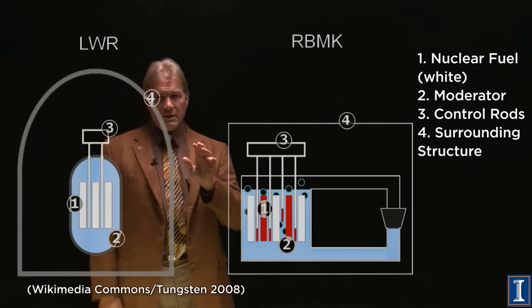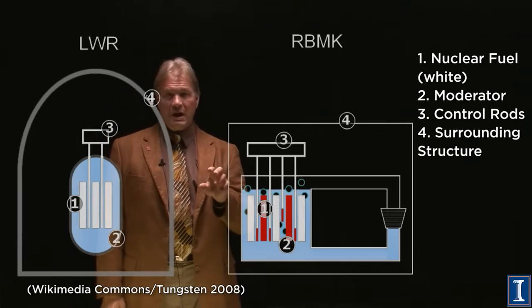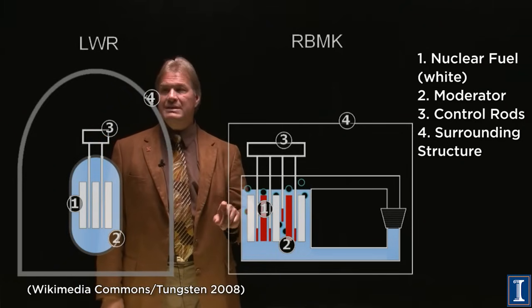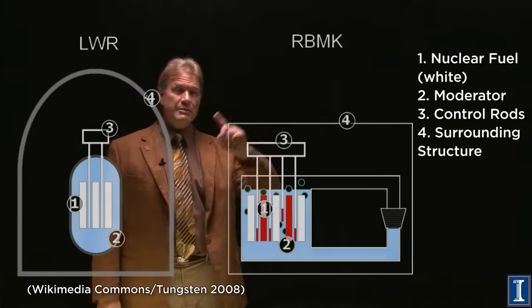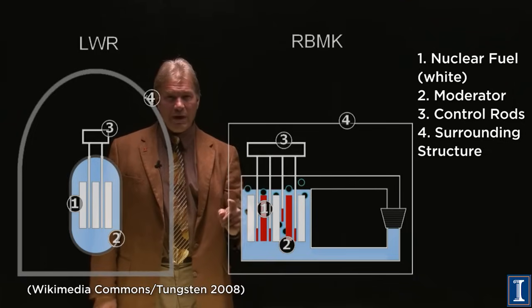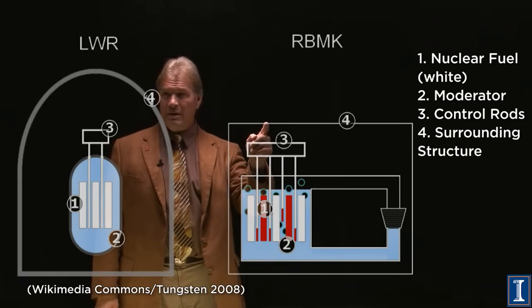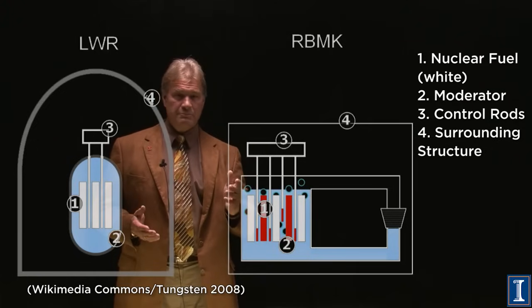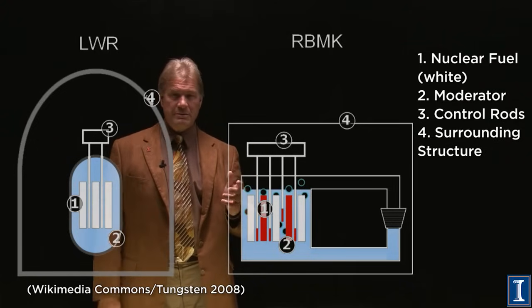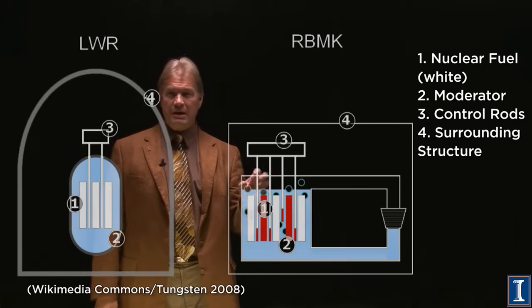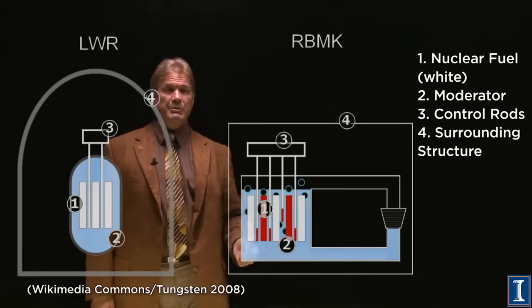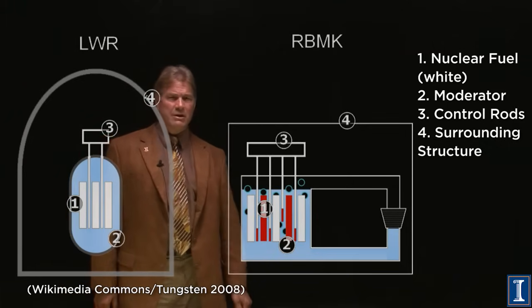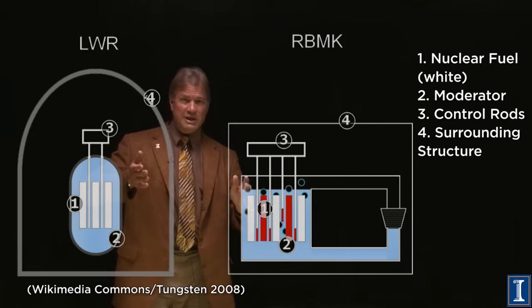The reactors in the Soviet Union, the RMBK reactors, did not have a containment building. This flimsy little white line here, it's merely a normal building. Cement block, something else, nothing whatsoever designed to hold this material inside. So when people say, can Chernobyl happen here? The first answer is absolutely not.